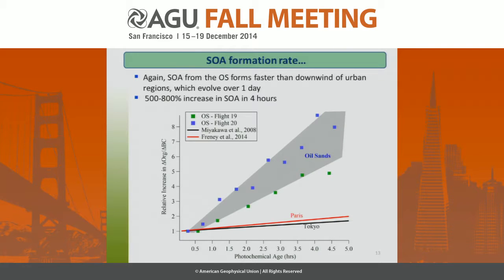Putting it in context: flights 19 and 20 fall in the gray section, while studies from Paris and Tokyo using black carbon as a tracer fall much lower. You can see that in pretty short order, you can have a 500 to 800% increase in the amount of SOA formed in the oil sands, compared to how slowly it evolves in urban outflow over about a day or so. This is pretty significant.